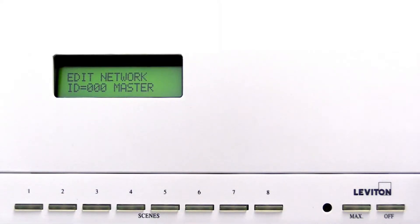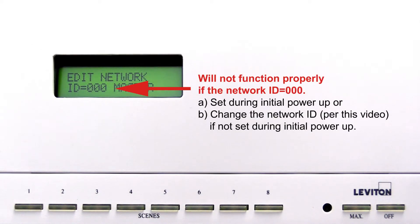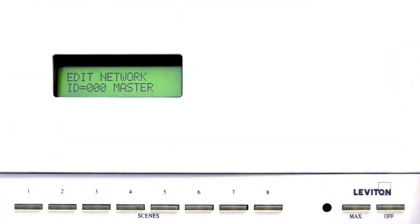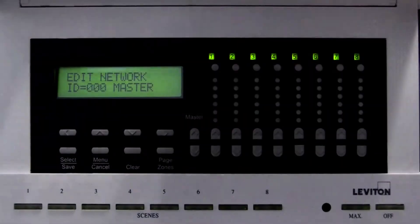You will have the opportunity to set the network ID during the initial powering up of the station. The LCD screen will display the network ID. A D4000 series master station will not function properly unless the network ID has been set to a network ID other than ID000.